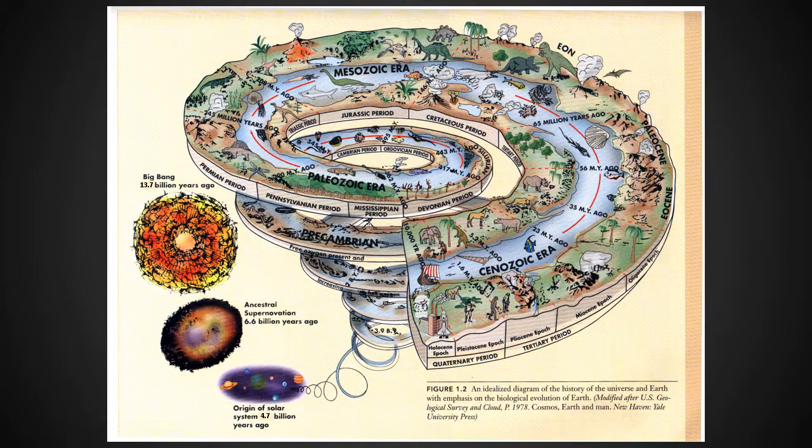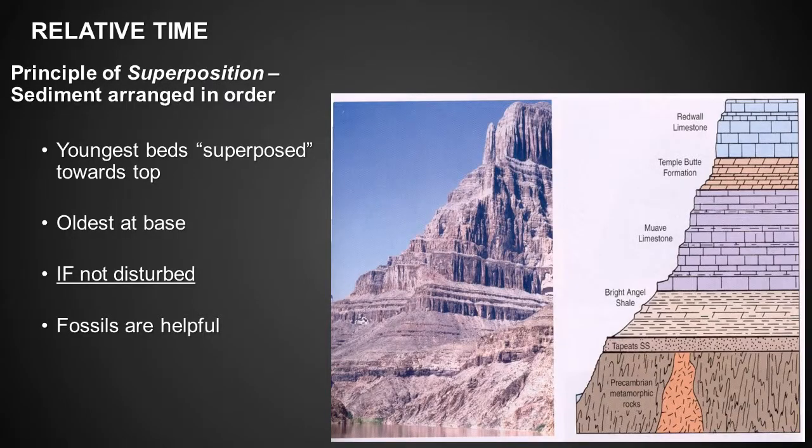There are two types of geologic time. Do you know what these are? That's right: relative time and absolute time. The image and drawing shows the rocks in the Grand Canyon, which are used to illustrate the concept of relative time.